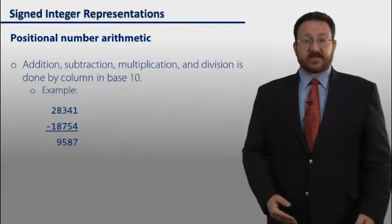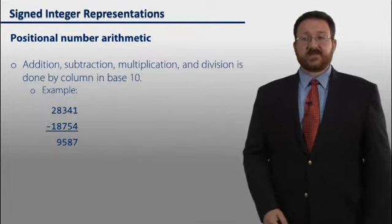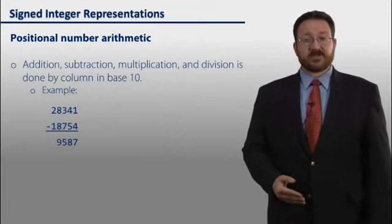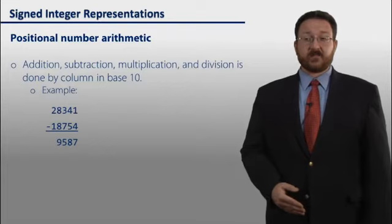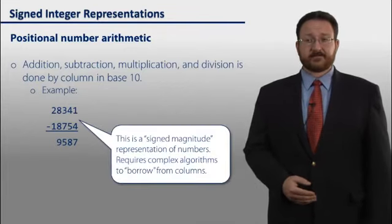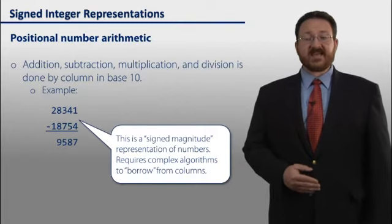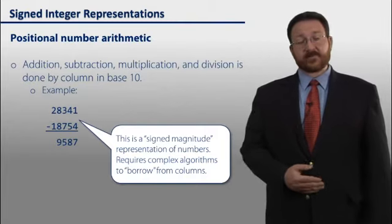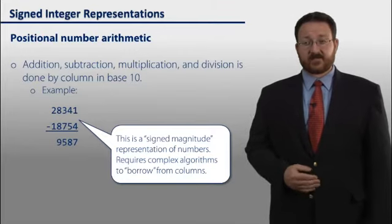Positional number arithmetic is used in base 2 and base 10. In our base 10 number system, addition, subtraction, multiplication, and division is done by column. So here's an example of a base 10 subtraction. In this, there is a signed magnitude representation of our numbers. The bottom number is negative. It's represented by the minus sign in front of the number.